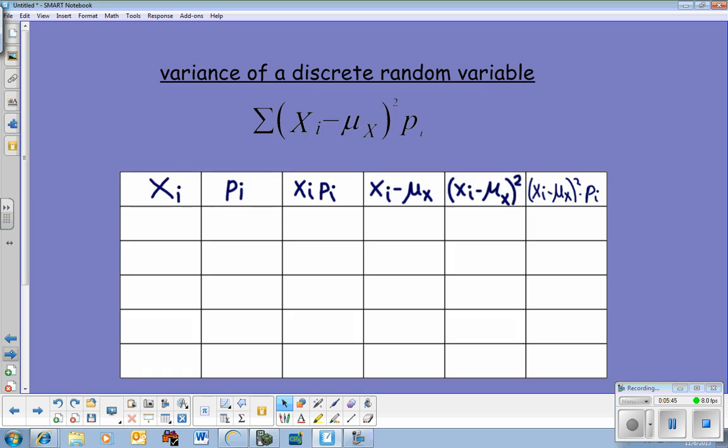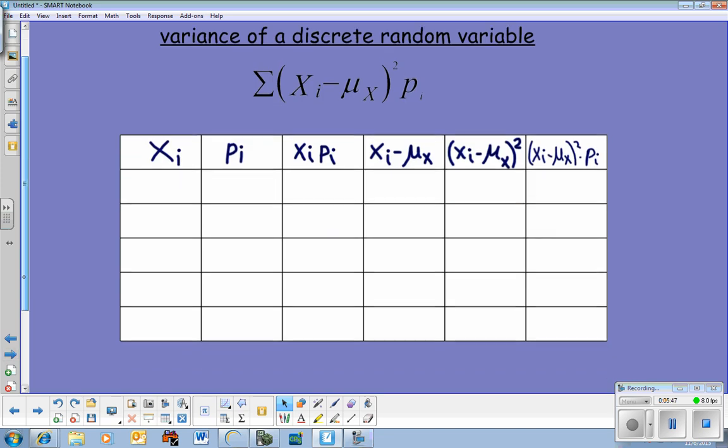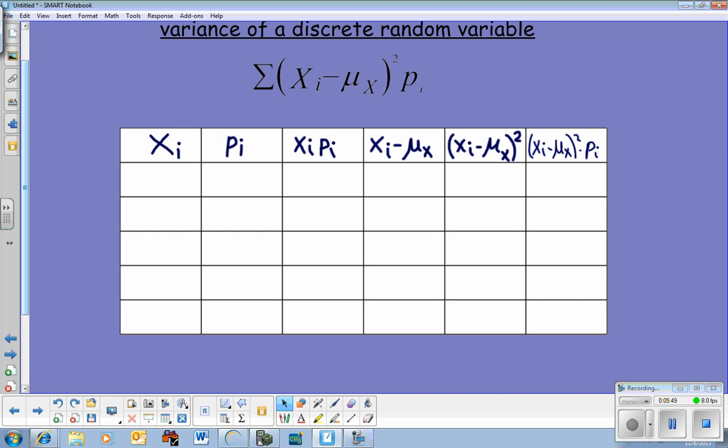All right, variance slash standard deviation. The formula you can see at the top. It's the sum of x sub i minus mu sub x squared times p sub i. Now, that means quite a bit wrapped up in there. In this chart, when we found standard deviations the old way with just a set of numbers, we did a chart similar to this.